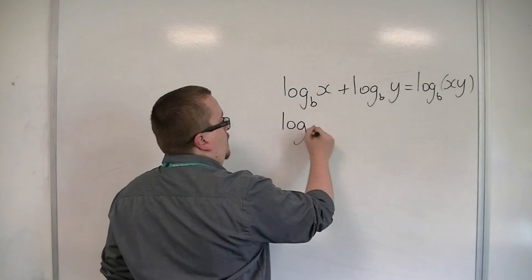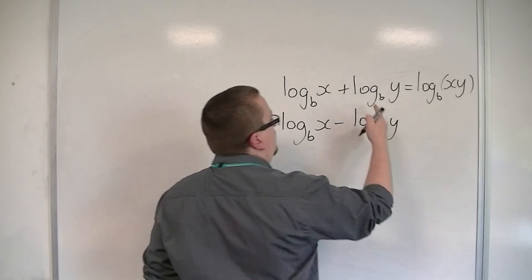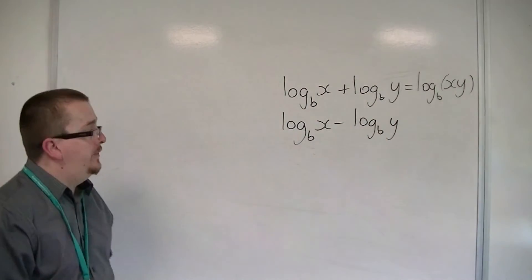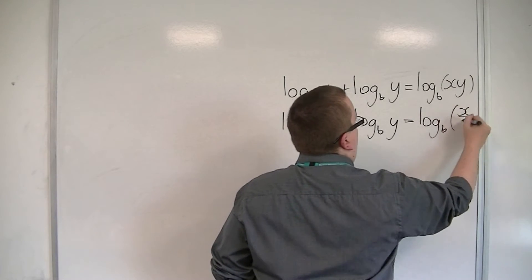Then you've got log base b of x take away log base b of y. So notice how these logarithms have the same base. That allows us to combine them. So log base b of x over y.